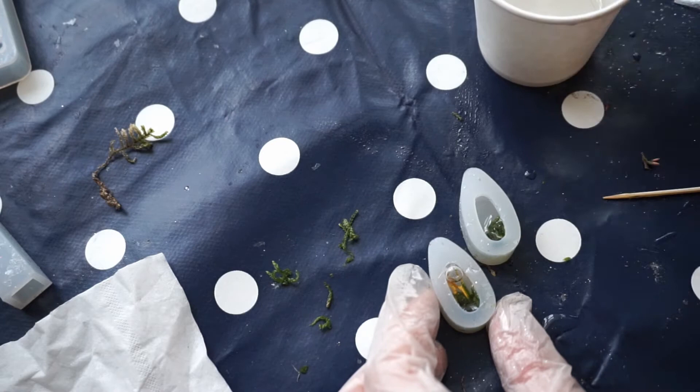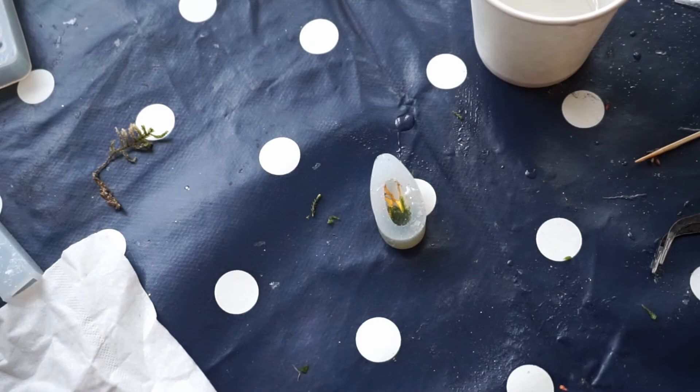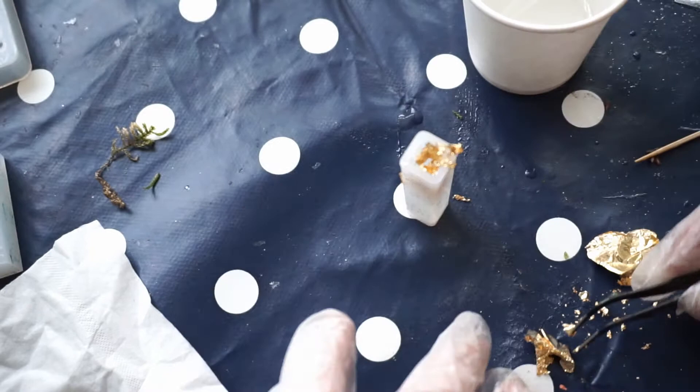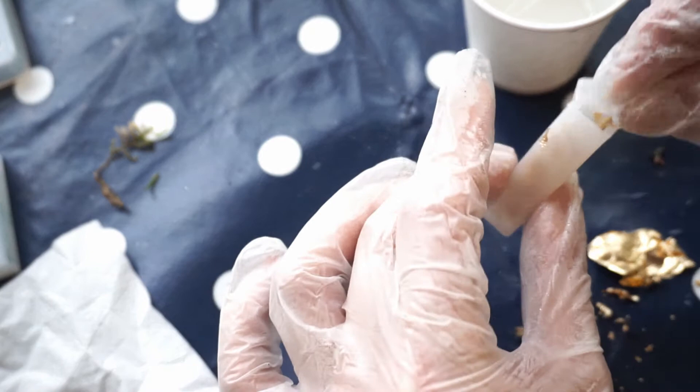I decided to use some gold flakes, so I'm gonna just stuff them in the mold. Mix it a bit. There is already a drop of resin. Now adding a bit more. Pokey poke. And a piece of dried fern.